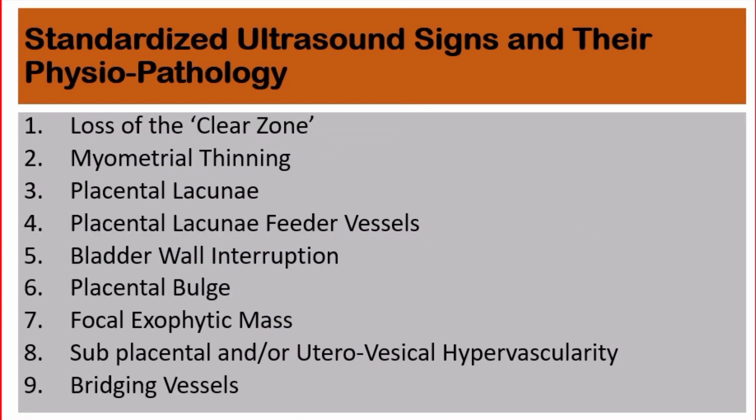Standardized ultrasound signs for placenta accreta spectrum and their physiopathology include: 1. Loss of the clear zone; 2. Myometrial thinning; 3. Placental lacunae; 4. Placental lacunae feeder vessels; 5. Bladder wall interruption; 6. Placental bulge; 7. Focal exophytic mass; 8. Subplacental and/or uteroplacental hypervascularity; and 9. Bridging vessels.